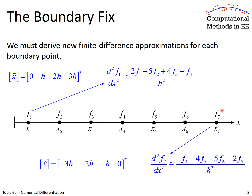We can do the same thing for the last point. The only difference is how we define the offset x-tilde points. Here we put zero in the last position, because we want to calculate the second-order derivative at the last point f7, using f6, f5, and f4. So f6 is at minus h, f5 at minus 2h, and f4 at minus 3h. Given these coordinates, we derive this finite difference approximation. You can look at the coefficients of these two finite difference equations and see some similarities.